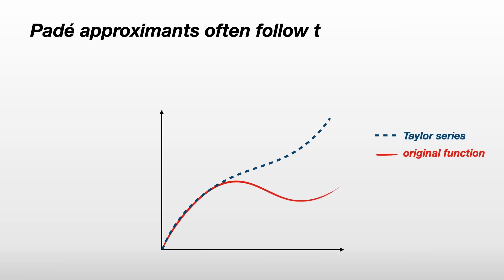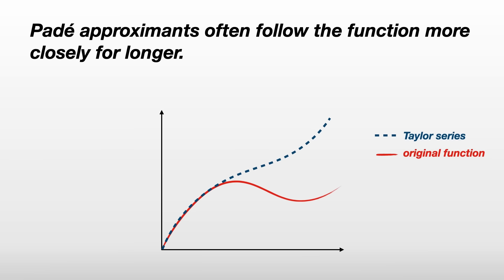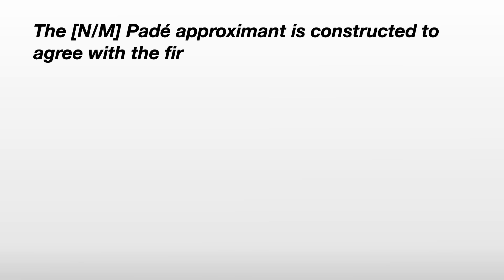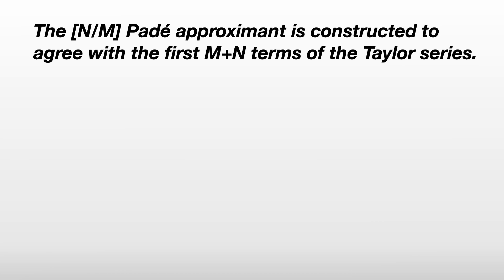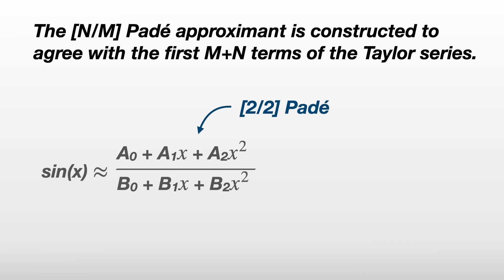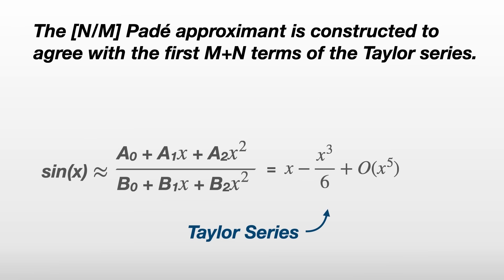Padé approximants often follow the function more closely for longer. We'll figure out why soon, but let's start by constructing one. The n over m Padé approximant is constructed to agree with the first n plus m terms of a Taylor series. So if we want a 2 over 2 Padé approximant for sine of x, that will be in the form of a second order polynomial divided by another, and it needs to agree with the Taylor series of the original function up to n plus m terms — in this case, the fourth order Taylor series of sine of x.